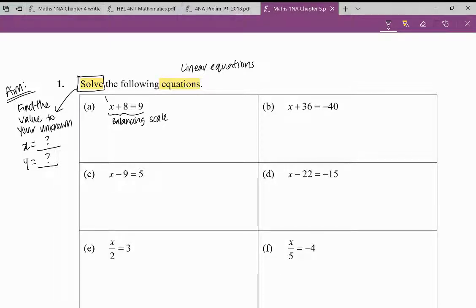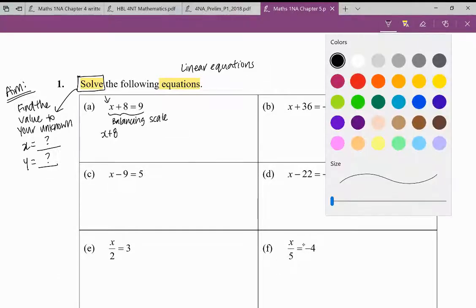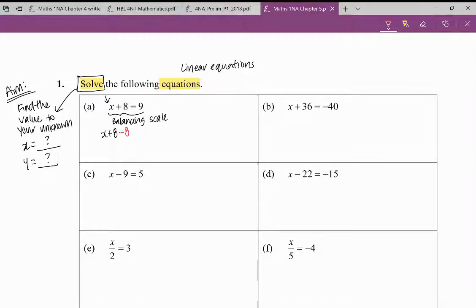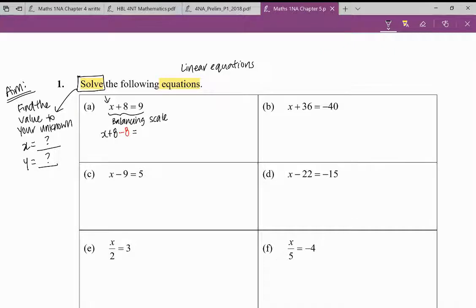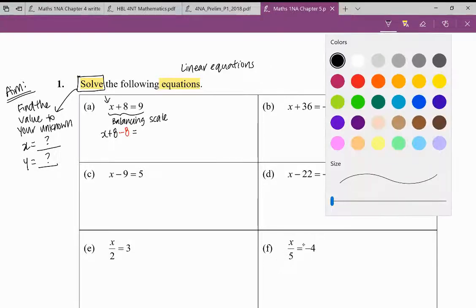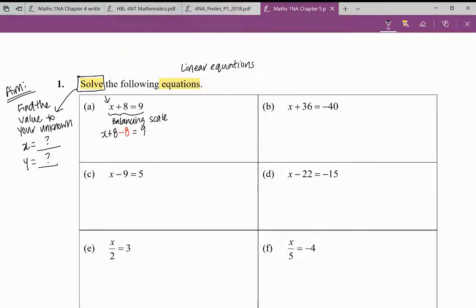So my aim, remember, is to find the value of x. So I will have to remove it from the equation. What I do is I remove it by subtracting it on the left hand side. So if I do it on the left hand side, I also have to do it to the right hand side.